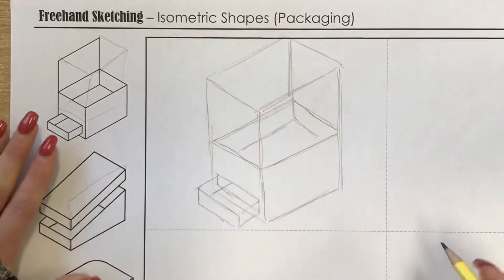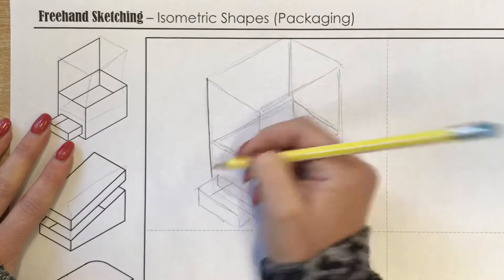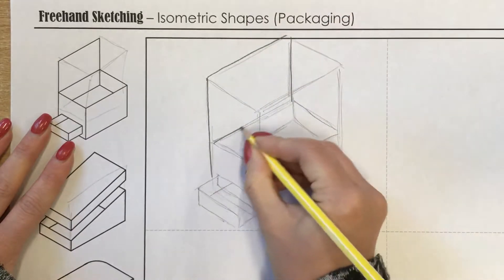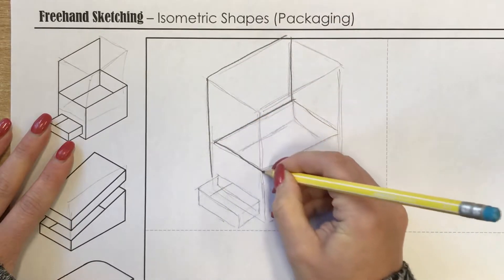Once you've got a rough idea, you can then press firmer with your pencil and really start to define the shape's outline.